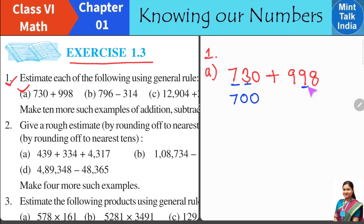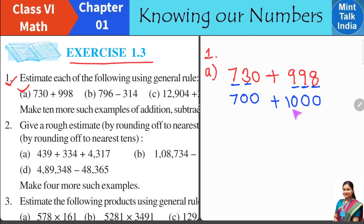Now let us see this number: tens and hundreds of 998. The digit in the tens place is more than 5, so the digit in the hundreds place will be 1 greater — that is 9 plus 1 is 10 — and the remaining two places get zeros. Then we add: 1000 plus 700 becomes 1700. So 1700 is your estimated addition answer.